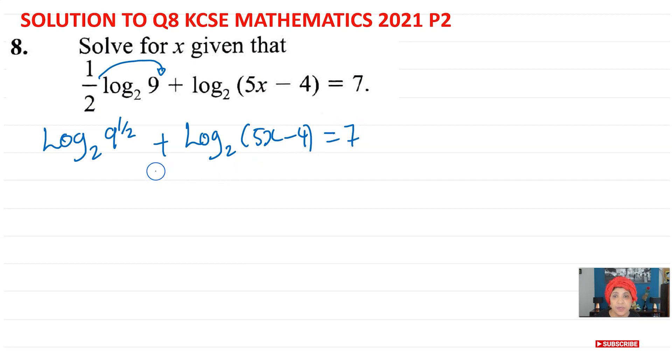So obviously now we can see, first of all, this 9 to the power half, what does it mean? It's just the square root of 9. So 9 to the power half is the same as square root of 9, which is 3. We're going to write this as log 3 to base 2 plus log of all this again, 5x minus 4 equal to 7.